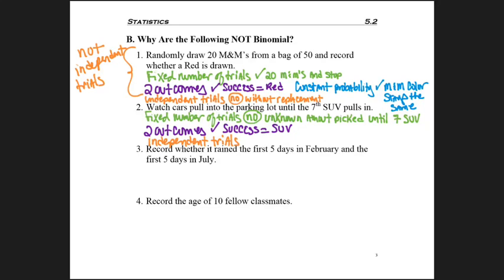What about independent trials? Does that happen here? Yes, because one car does not affect another. Just because you're pulling in with a sports car doesn't make the car behind you change what type of car it is. And the last one we want to check for is constant probability. Did the probability change over time? No, we do have constant probability. Car types do not change, they're set.